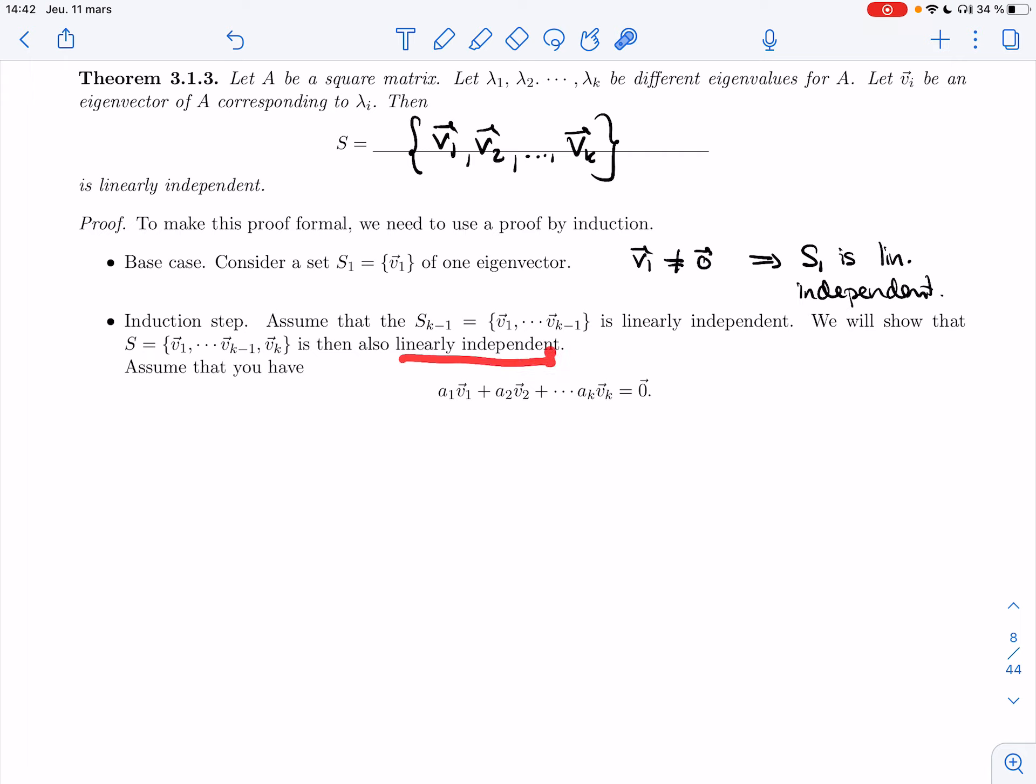Alright, so if you really wanted to do a full proof, the way to do it is you start with v_1, independent. You use this to add v_2. Then v_1, v_2 is independent. You use this again to add v_3. You use this to add v_4, and so on. And so if this step is true, you'd be able to say that any size of set built this way would be linearly independent.